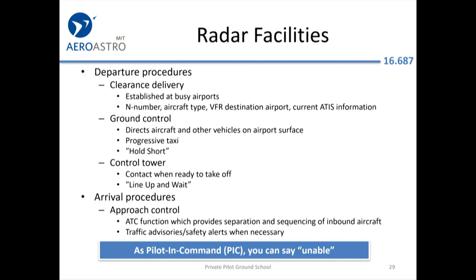There are a lot of different radar facilities. You may not interact with all of these as a private pilot, but there are clearance delivery services at busy airports. Ground control you'll definitely talk to at Hanscom or Lawrence — there's usually both a tower and a ground. When you're ready to enter the runway after your engine run-up, you talk to tower. They give you clearance to take off. When you've landed and exit the active runway, you switch to ground, and ground tells you how to taxi to where you're parking.